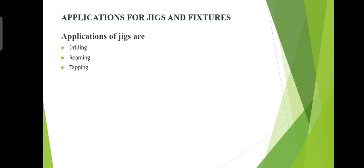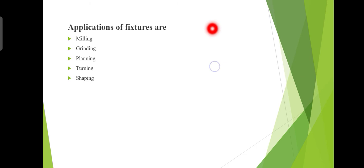Applications of jigs include drilling, reaming, and tapping operations. Tapping is used when you want to create internal threads. Applications of fixtures include use in milling machines, grinding machines, planning machines, and shaping machines. These are the basic applications of jigs and fixtures.